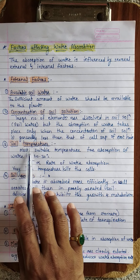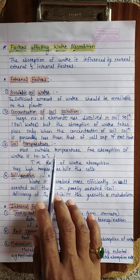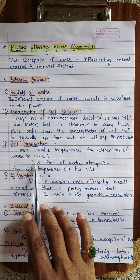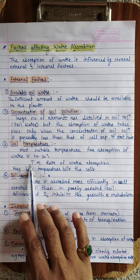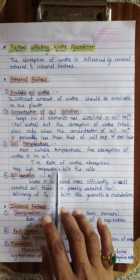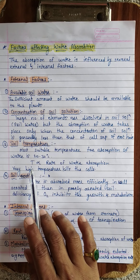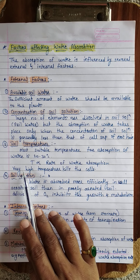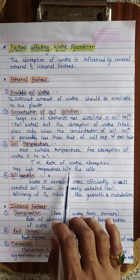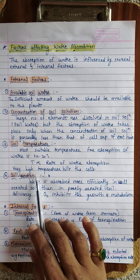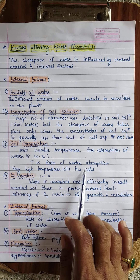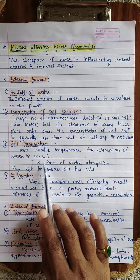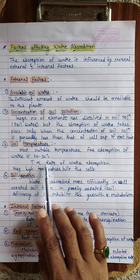The third external factor is soil temperature. The most suitable temperature for absorption of water is 20 to 30 degrees Celsius. As temperature increases, there is an increase in the rate of water absorption. However, at very high temperatures, cells of the plant get killed. Therefore, a moderate temperature of 20 to 30 degrees Celsius in the soil is ideal.